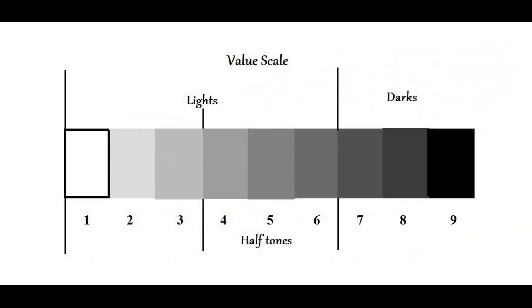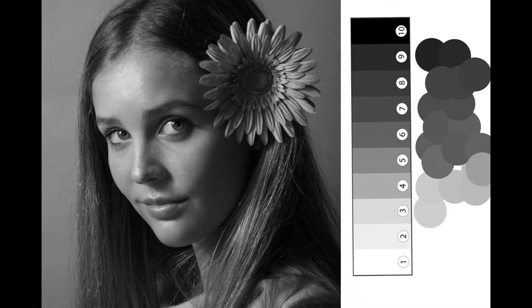Simply put, value is how light or dark a hue or a color is. Here's a look at a value scale that groups the values into lights, halftones or midtones as I like to call them, and dark values. This can be very helpful when trying to simplify a reference image. You can see here I've converted my reference image to black and white and I'm comparing the value scale to the colors I've selected to mix on my paint palette.